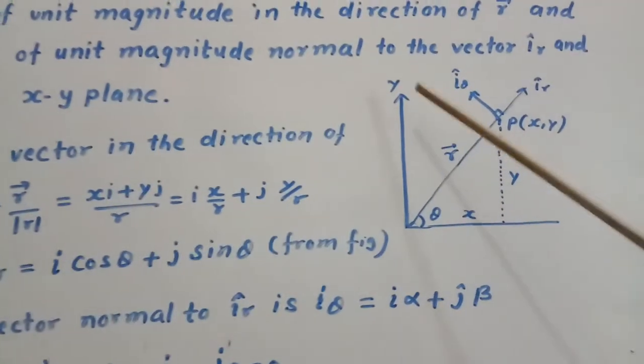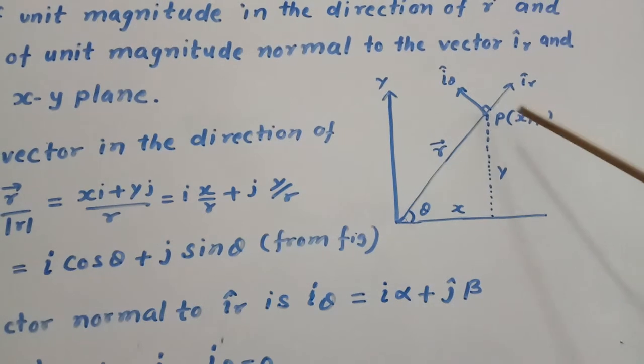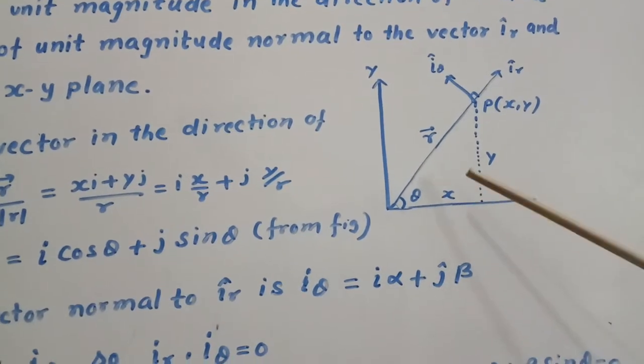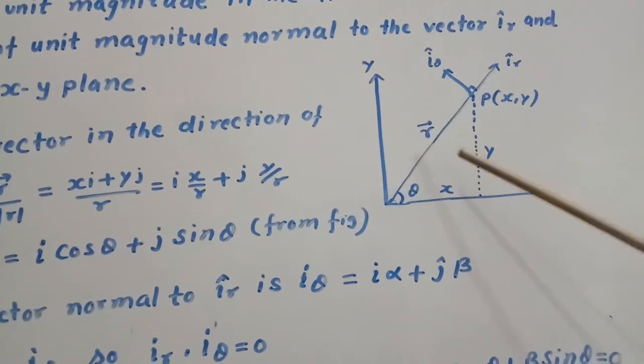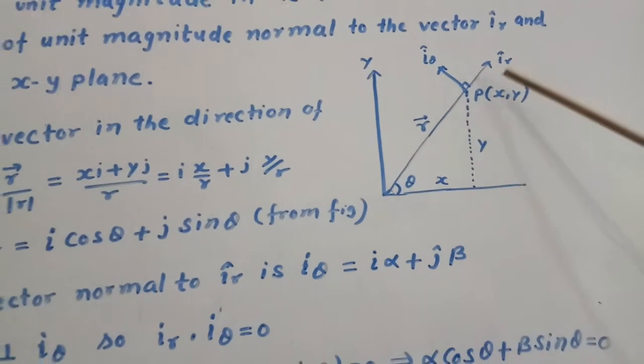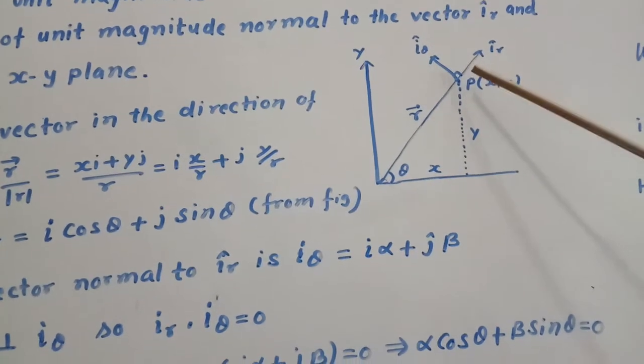Here the diagram is shown. This is y-axis, this is x-axis. This is vector R and this point is xy. So this is x, this is y. We can find the ratio x upon R like base upon hypotenuse which will be cos theta, and y upon R that will give sin theta. This is i_r vector and this is i_theta vector. They are mutually perpendicular.